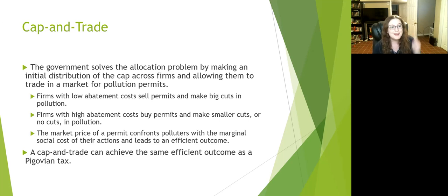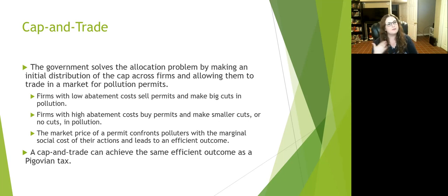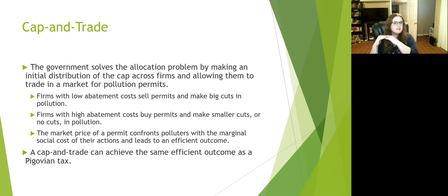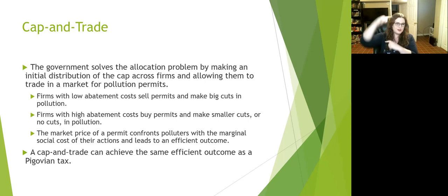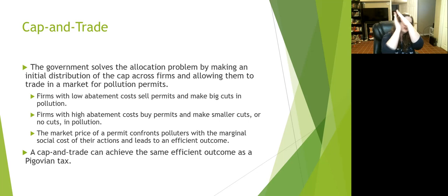Cap and trade can come to the same outcome as the Pigouvian tax, because the price companies pay to pollute is similar to the difference between their marginal cost and marginal social cost. It pushes us closer to marginal social cost and achieves an efficient outcome.